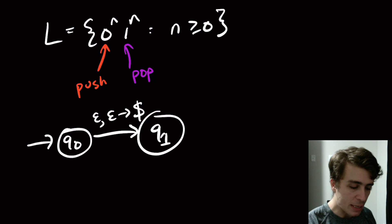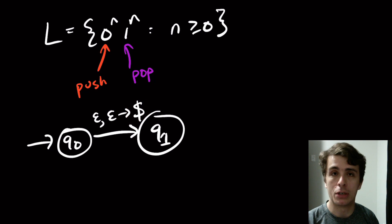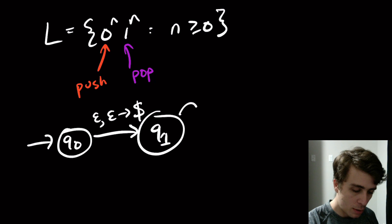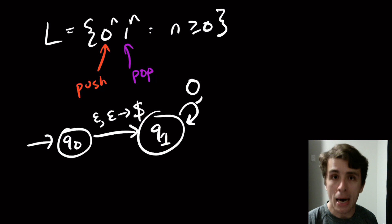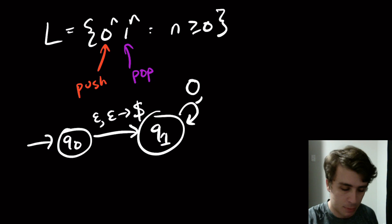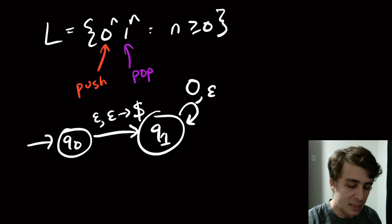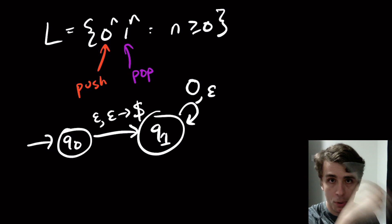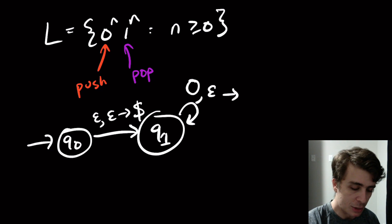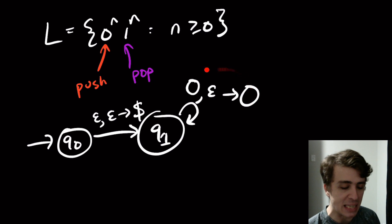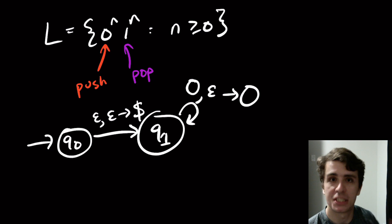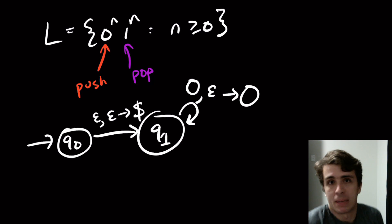Now we need to read all of the zeros. We make a self-loop on q1: we read a zero, we don't pop anything — because the job of this transition is only to push zeros — and we push a zero onto the stack. The symbol pushed doesn't have to be zero; it could be x or anything, since the stack has nothing to do with the input, but it's nice to have them coincide.